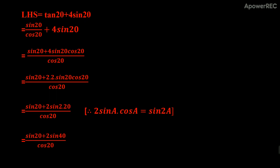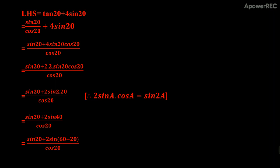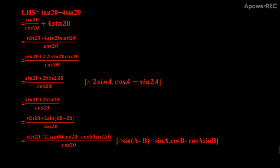We can write 40° = 60° − 20°, so sin(40°) becomes sin(60° − 20°). The expression becomes sin(20°) + 2sin(60° − 20°), over cos(20°).